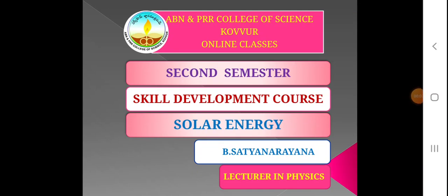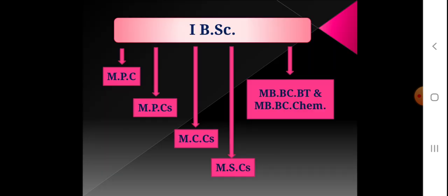Students, welcome to online classes. ABN and PR Art course of science, Kauru. On the second semester, one of the skill development courses — Solar Energy. This is B. Sajshnana, Lecturer in Physics. This SDC, Solar Energy skill development course, is common for all B.S.S. students.